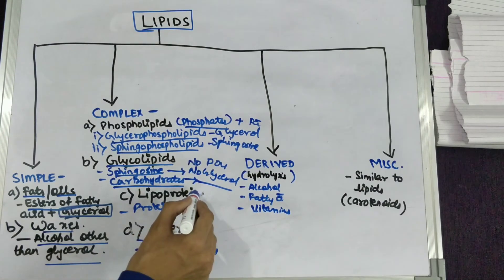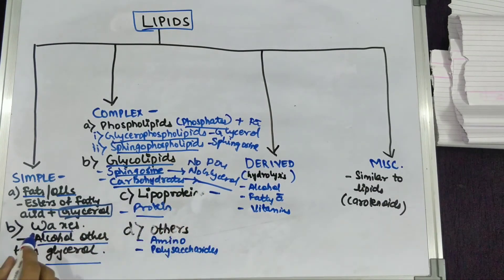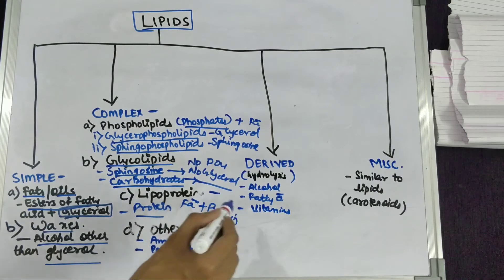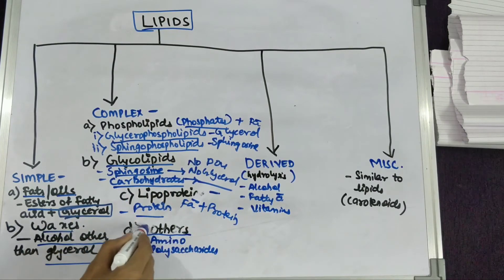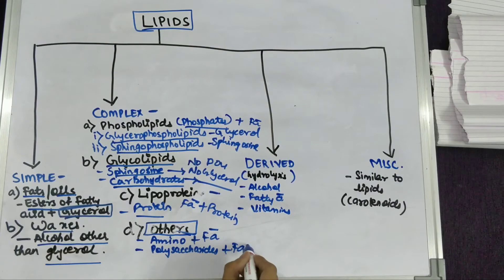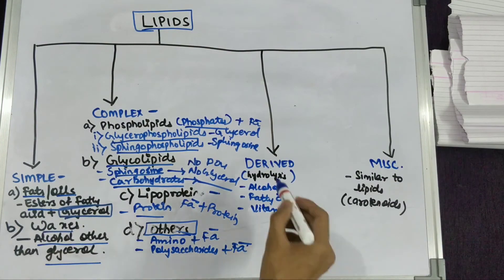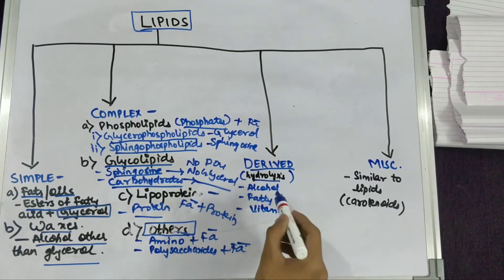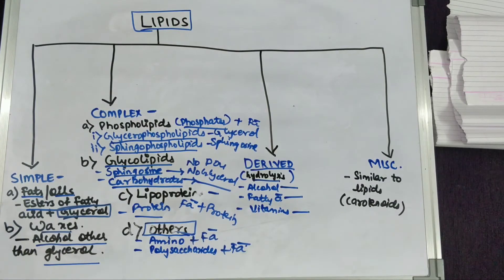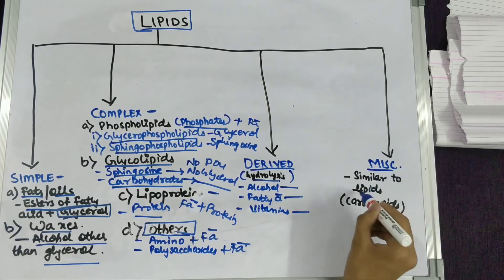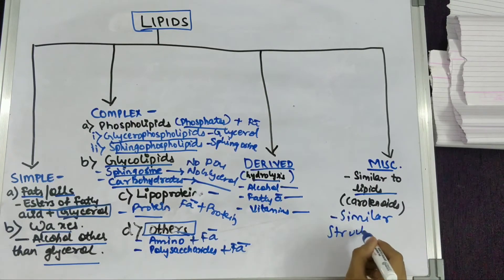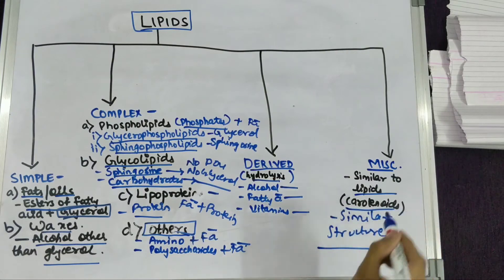Lipoproteins are molecules that contain fatty acid and protein molecules; these are high molecular weight macromolecules. Other complex lipids include lipids which contain an amino group and fatty acid, and a second class of fatty acid plus polysaccharides. Derived lipids include the hydrolysis products of lipids — these are alcohols, fatty acids, and vitamins. Miscellaneous lipids include molecules that have a similar structure to lipids, such as carotenoids.